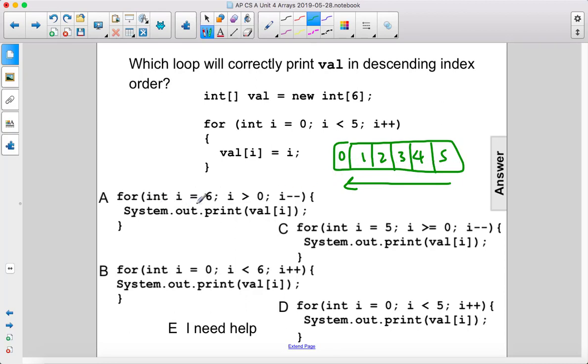Let's see here. If i equals 6, that would access val[6], which does not exist, so it's definitely not A. This one counts up from 0, so it's going to print that way, which we don't want, so it's not B.